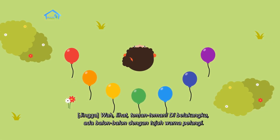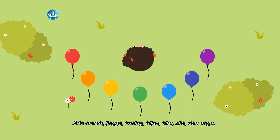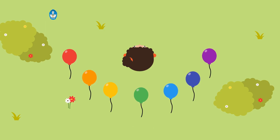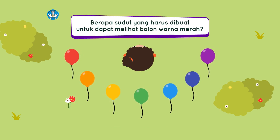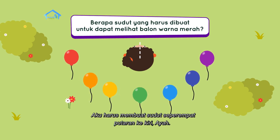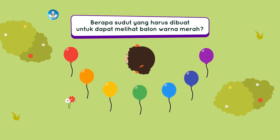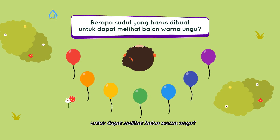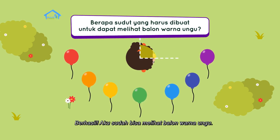Lihat teman-teman, di belakangku ada balon-balon dengan tujuh warna pelangi: ada merah, jingga, kuning, hijau, biru, nila, dan ungu. Sudah siap berlatih, Jingga? Siap, Ayah! Sekarang coba kamu tentukan berapa sudut yang harus kamu buat untuk dapat melihat balon warna merah. Aku tahu, aku harus membuat sudut seperempat putaran ke kiri, Ayah. Sekarang aku bisa melihat balon warna merah. Betul! Selanjutnya berapa sudut yang harus kamu buat untuk dapat melihat balon warna ungu? Aku harus membuat sudut seperempat putaran ke kanan, Ayah. Berhasil, aku sudah bisa melihat balon warna ungu.